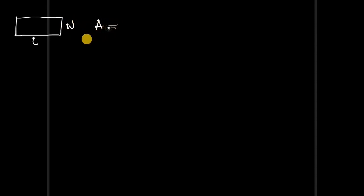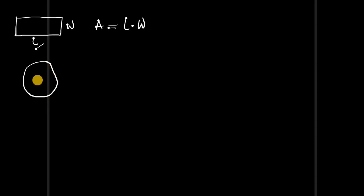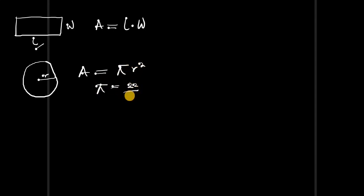Hello, in this video we are going to consider calculus, and at the end of the video you're going to have a general understanding of what calculus is all about. But before then, let's consider this rectangle. If this rectangle has a length and also a width, then you are asked to find the area, you simply multiply the length by the width. This is very straightforward because we have the formula ready. Now let's also consider a circle. If this circle has a radius of r, then if you are asked to find the area of the circle, you simply make use of the formula pi r squared, where pi is simply equal to 22 over 7.